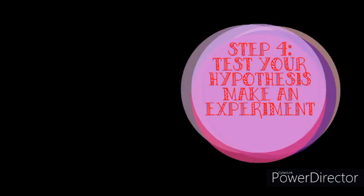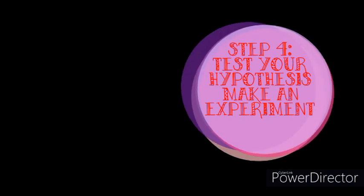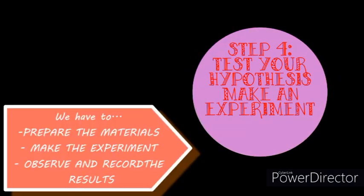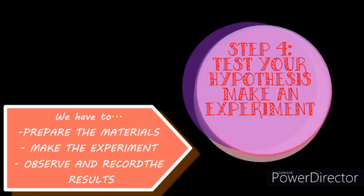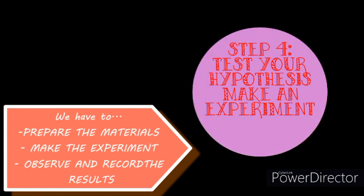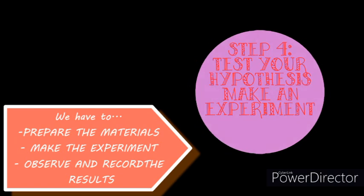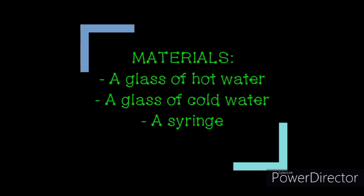Step 4: Test your hypothesis or make an experiment. This step has several sub-steps. We have to find out the materials we need and we have to make the experiments. To perform this experiment, we need a glass of cold water, a glass of hot water with food coloring, and a syringe.